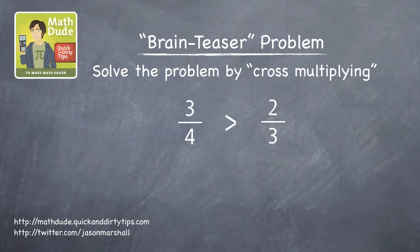Here's how it works. Instead of directly comparing the fractions, let's do the following. First, multiply the numerator of the first fraction by the denominator of the second. Three times three is nine.